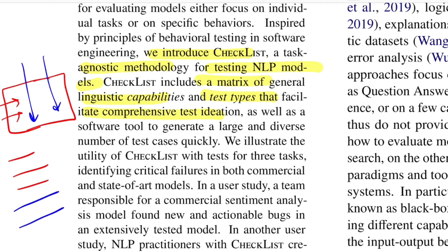The next test type is directionality. For example, in sentiment analysis, if the original sentiment was negative and you add a small piece of negative text, will the model be more confident for the negative sentiment, or will the score move towards positive? The last one is MFT — Minimum Functionality Test — which is just like unit tests you write for software programs. You have a bunch of examples with ground truth labels, and you check if your model performs well on those examples. This is the entire matrix the authors propose, and it's agnostic of the task type.